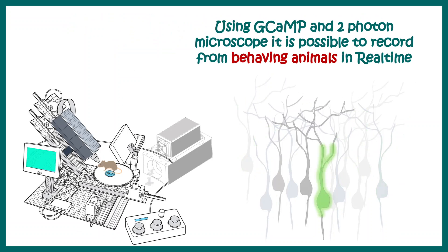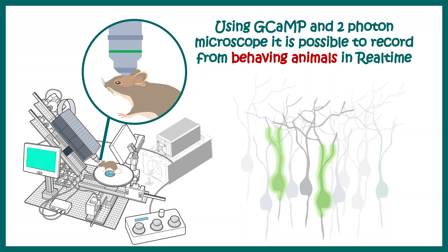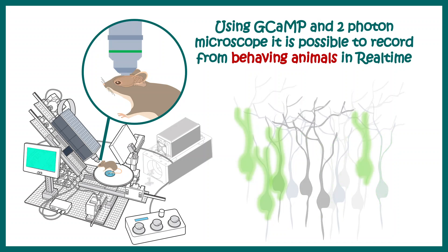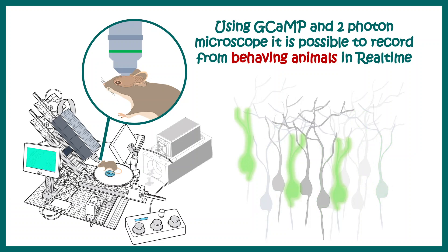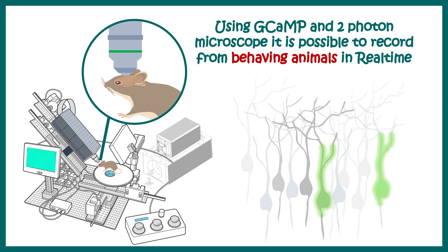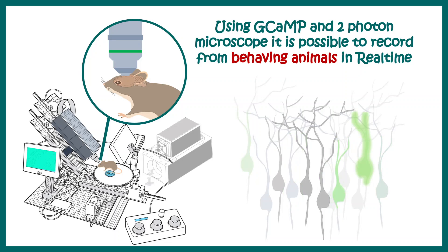Using GCaMP in combination with two-photon microscopy, scientists are able to record neuronal activities from behaving animals. For example, they can drill a hole in a mouse's skull and record activity if the mouse expresses GCaMP in a particular brain region. We can see how the mouse brain region is fluorescing over time.